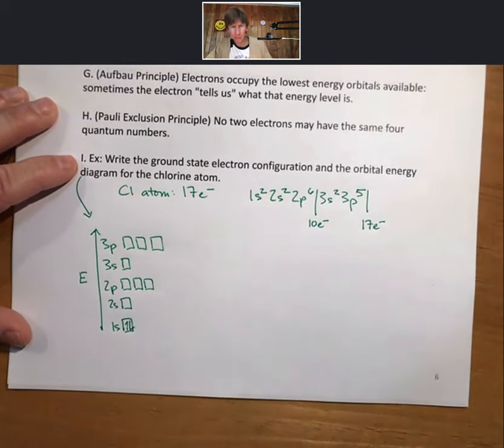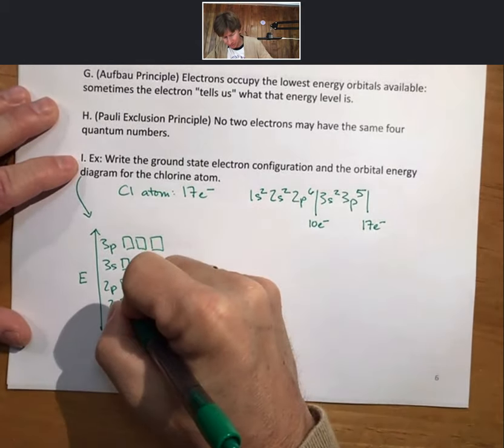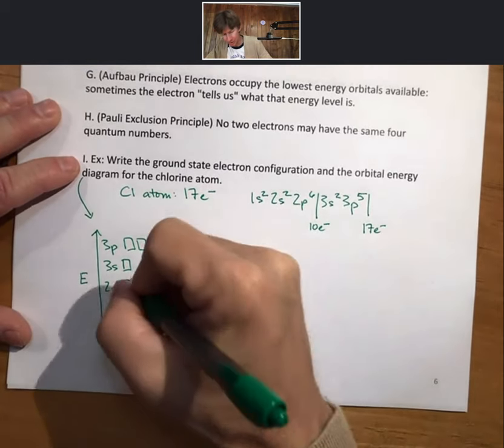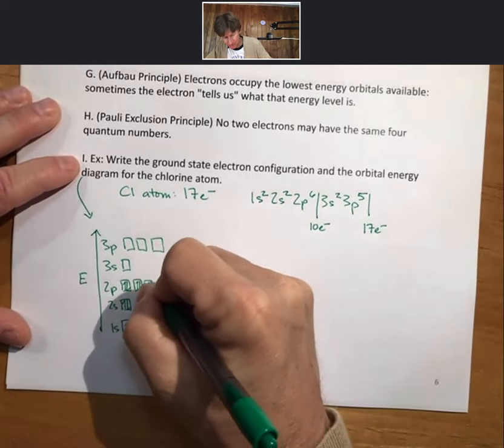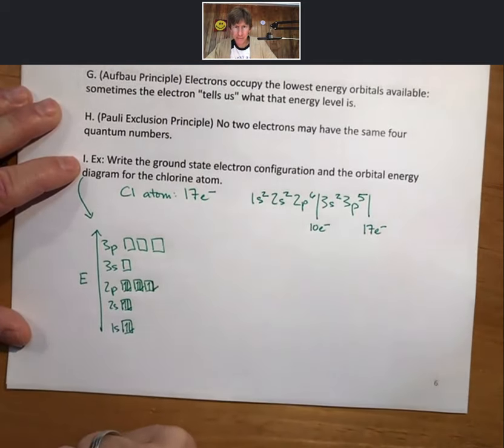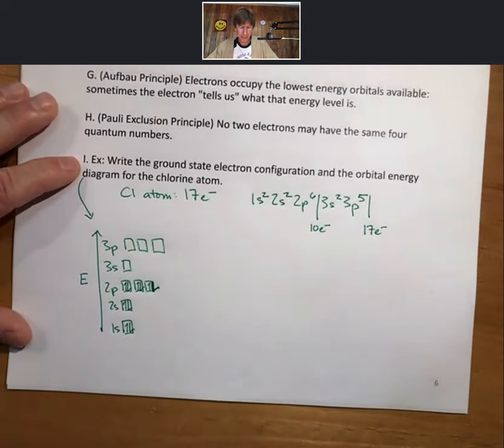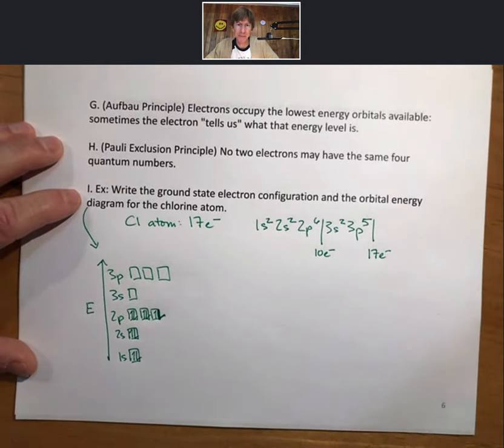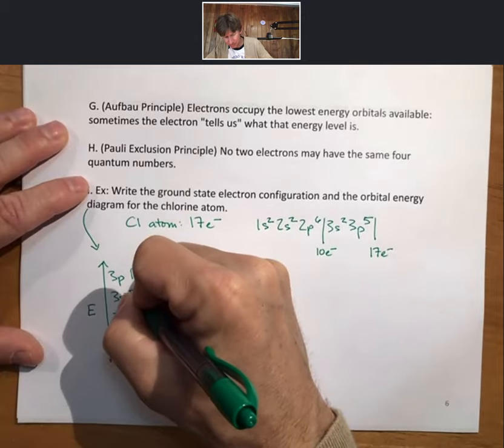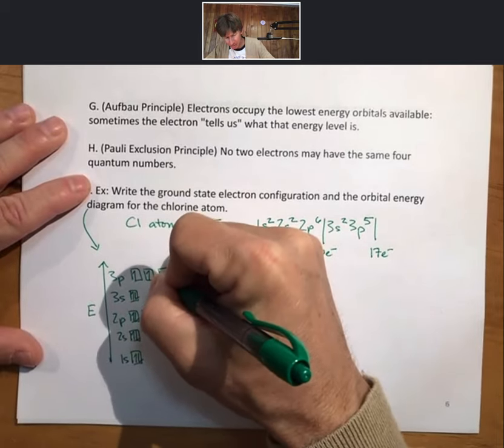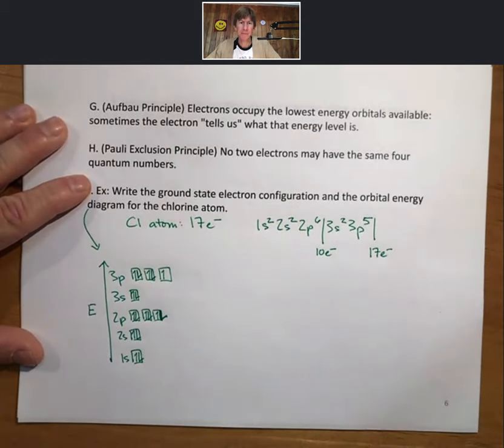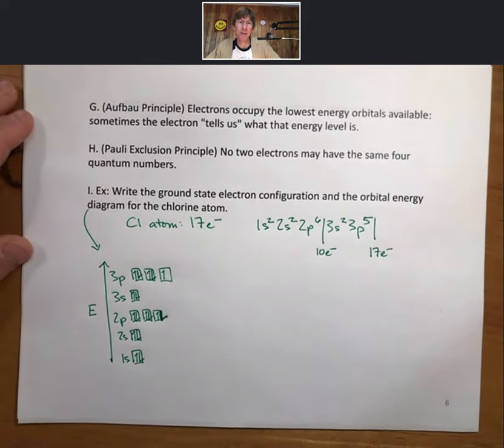So, 1, 2 in the 1s, 1, 2 in the 2s, 1, 2, 3 into 2p, 4, 5, 6, it's in there somewhere, there it is, into the 2p, that's all 6 of them, now 3s, 1, 2, 3p, 1, 2, 3, 4, 5. That is the orbital energy diagram for the chlorine atom. That seems a good place to stop for this video. We'll pick up there next time.